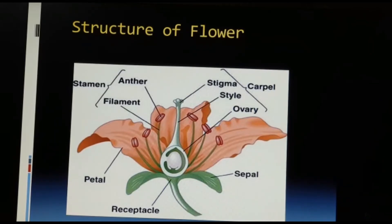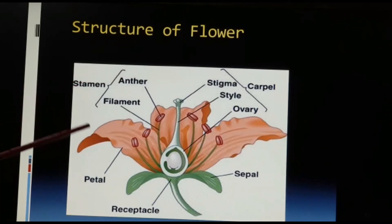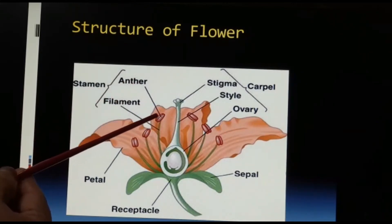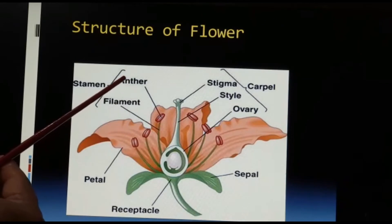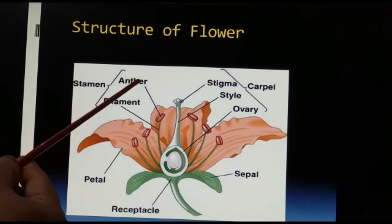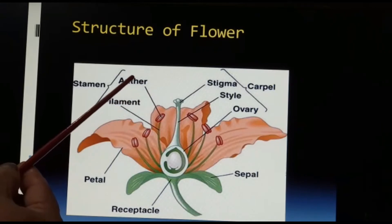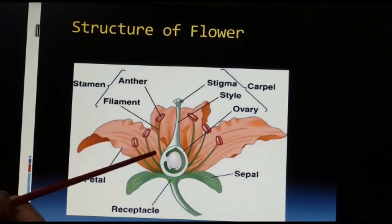We move on to the next third whorl, which we call the androecium, and a single unit of it is called the stamen. The androecium is the male reproductive part of the flower consisting of a stamen, and it has got an anther. These are the four anther lobes — two on the dorsal side and two on the ventral side — and the stalk with which these anthers are connected is called the filament.